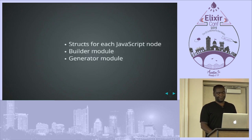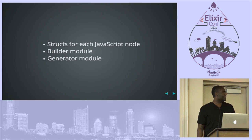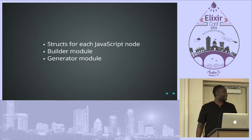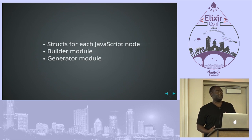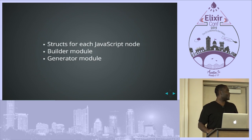The ES Tree library is an Elixir library that has structs for each of the JavaScript nodes defined in the ES Tree spec, all the way up to ES6. It also has a builder module with functions that make it easier to build up an AST — one function for each node. Later I added a generator module. The first versions of ElixirScript would build up the AST, turn it into JSON, pipe that JSON to a Node process running Escodegen, which would turn it into JavaScript code and pipe that back to the ElixirScript compiler.